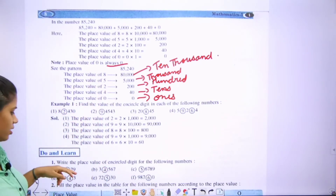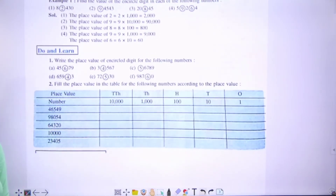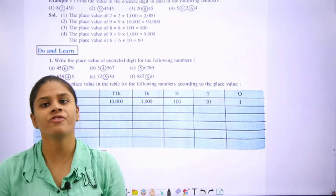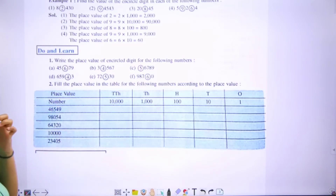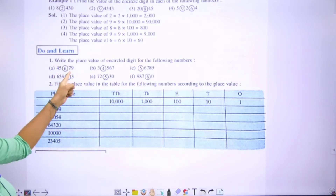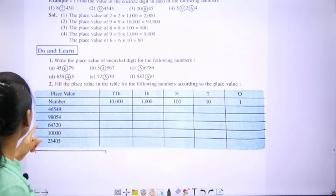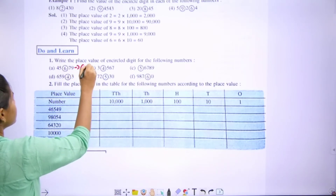Move to the next exercise. Write the place value of the circled digit for the following numbers. Students, there are some digits — we have to tell the place value of the circled digit. Let's start. First one: the digit stands in the hundreds place — that is six hundred.